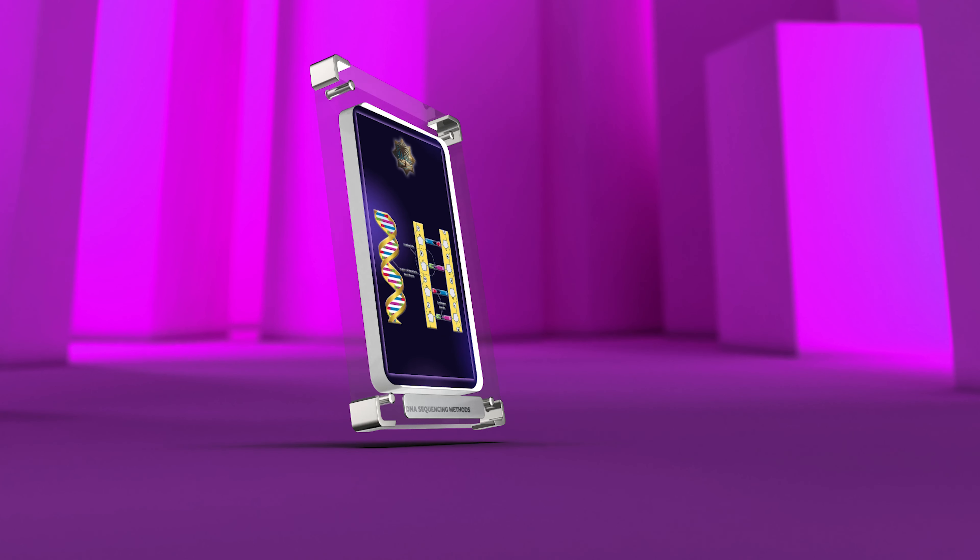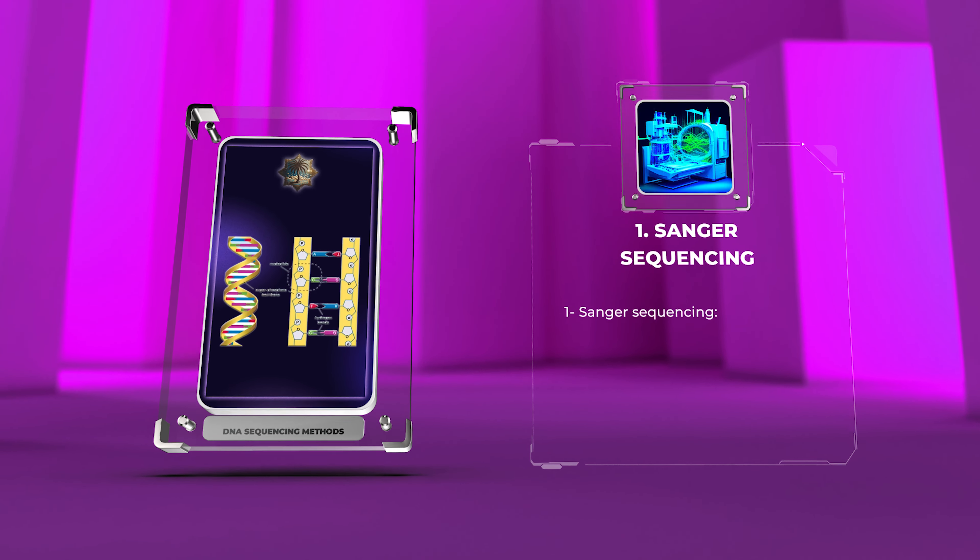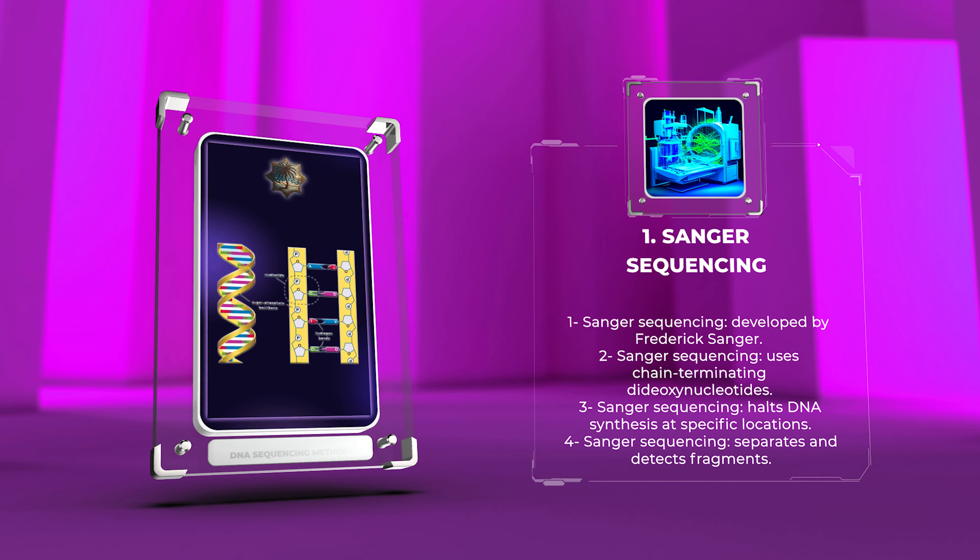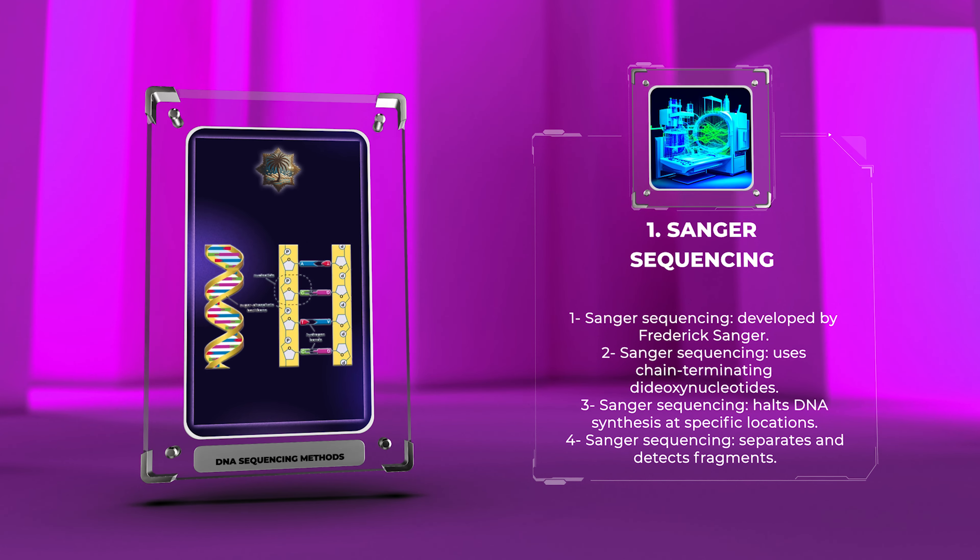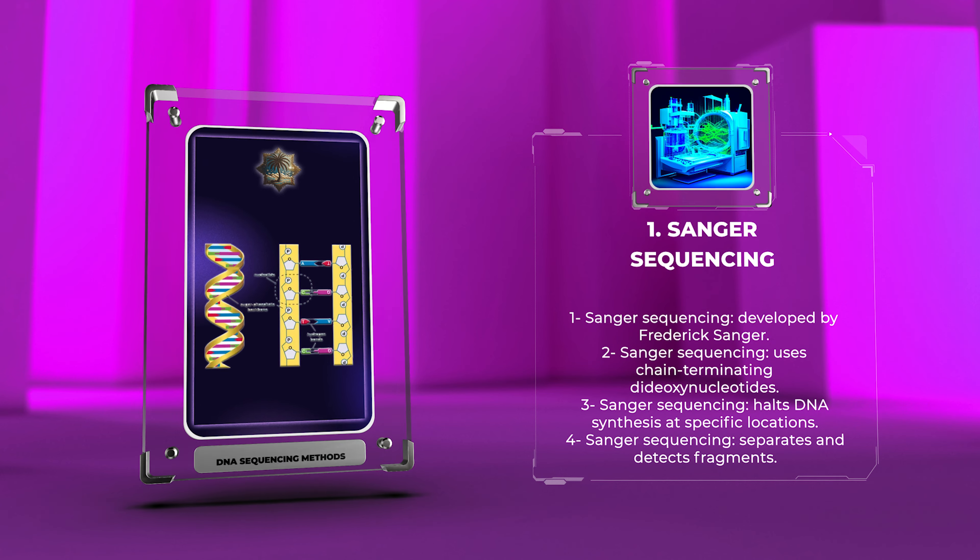Sanger sequencing, developed by Frederick Sanger, is a method that uses chain-terminating dideoxynucleotides to halt DNA synthesis at specific locations. Separating and detecting fragments allows for studying individual genes and confirming mutations.